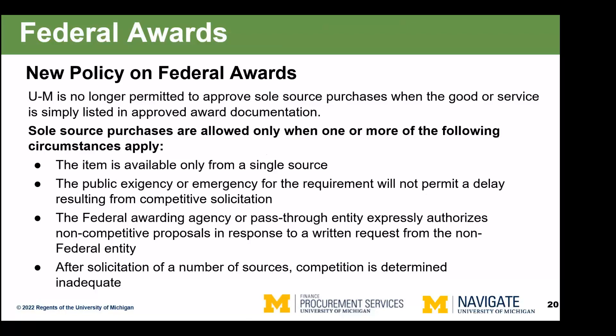I want to make a few notes about the 2018 changes to federal uniform guidance, which changed the policy on when sole source purchases are allowed. One of four circumstances must apply. The one we commonly see is that the item is available only from a single source, which is aligned with our expectations. The second is public exigency or emergency — the only time I've seen that used was related to pandemic items like COVID testing and standing up a field hospital on short notice. I would not expect that to apply to much of anything in the research commodity.